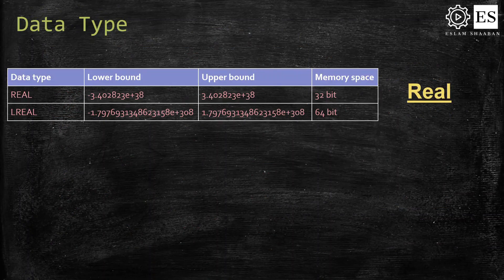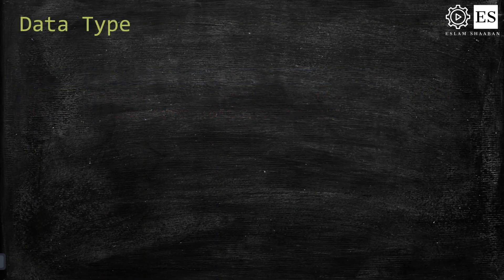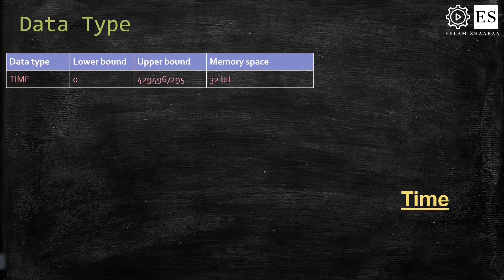The next data type is REAL and LONG REAL. These are necessary when using a floating point number.